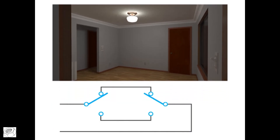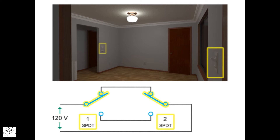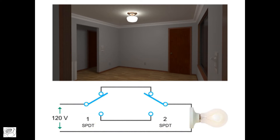In this diagram, depicting the operational components of a three-way switch, we have a typical 120-volt source and two single-pole double-throw switches controlling a load, or in this case, a light bulb. This type of circuit has a black, red, and white wire handling the current.